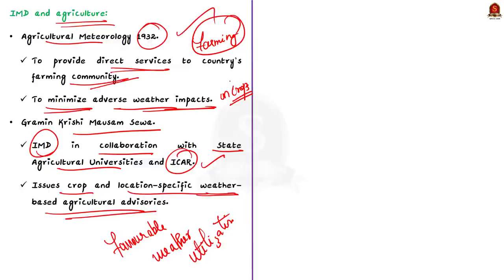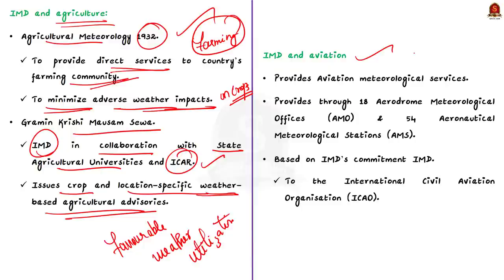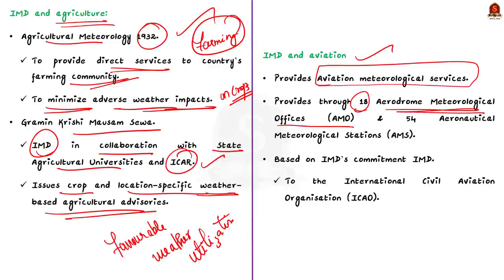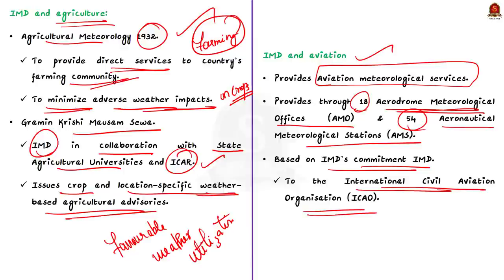Now the role of IMD in relation to aviation: IMD has a separate division for civil aviation. The services it offers to the civil aviation sector come under Aviation Meteorological Services, provided through 18 aerodrome meteorological offices and 54 aeronautical meteorological stations located at various national and international airports. This is based on a commitment made by IMD to the International Civil Aviation Organization. To ensure safety to air navigation, IMD also provides advisory information on tropical cyclones to meteorological watch officers in India and neighboring countries.